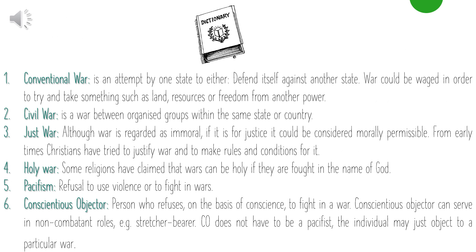Key words you need to know: a conventional war is an attempt by one state to either defend itself against another state, or war waged to take something such as land, resources or freedom from another power. An example is Russia and Ukraine. A civil war is a war between organized groups within the same state or country — the Troubles would be regarded as a civil war.